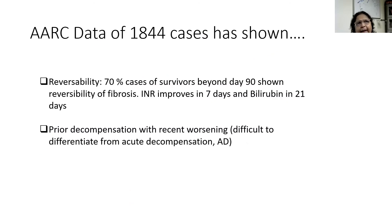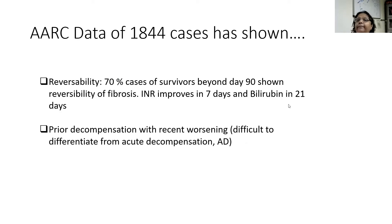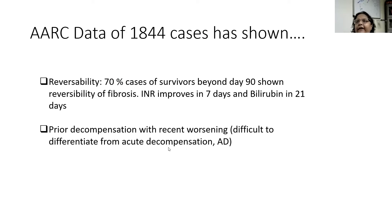The PASIL consortium data has almost 1,844 cases and shows that reversibility even of fibrosis is present in 70% of survivors at 90 days. INR improves within 7 days in those going on to survive. Bilirubin improves within 21 days in survivors. However, patients who have had a prior decompensation — this being not their first decompensation — are possibly not ACLF. They are confused with recent worsening. So the ACLF definition does not include patients who have had prior decompensation.